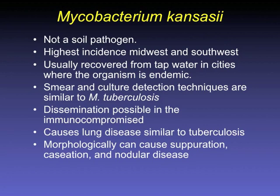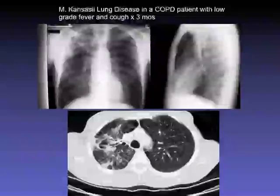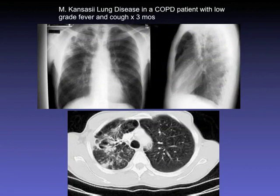Let's talk about M. kansasii, which in central Florida we're least likely to see. It's not a soil pathogen — highest incidence is in the Midwest and Southwest, not the Southeast — usually recovered from tap water. It's very similar to M. tuberculosis in many ways, though not person-to-person transmitted. Clinical manifestations are also very similar to TB: it can cause caseation and nodular disease. A COPD patient with low-grade fever and cough could easily be mistaken for TB when they actually have kansasii.